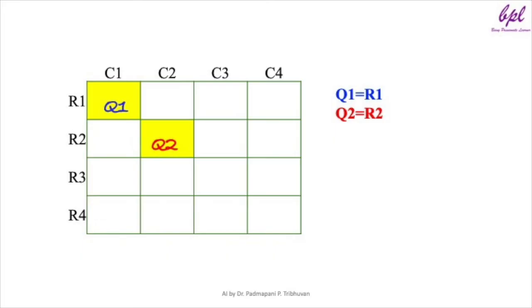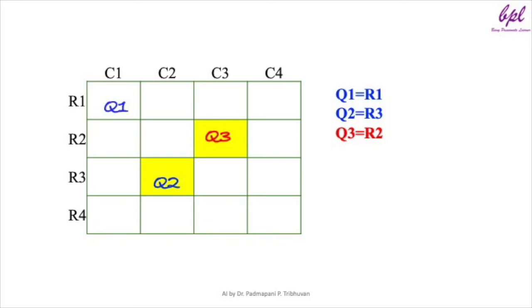q2 = r2 violates the diagonal constraint with q1. We then try q2 = r3 and this position does not violate any constraints. Now we place queen 3. We first try q3 = r1 but this violates the row constraint with q1. We move q3 to row 2: q3 = r2 violates the diagonal constraint with q2. We try q3 = r3 but this violates the row constraint with q2. Finally, we try q3 = r4 but this also violates the diagonal constraint with q2.